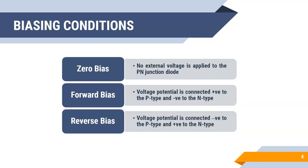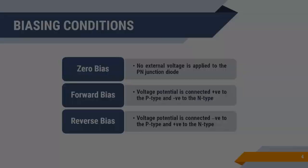Now, we are going to see the types of biasing conditions in PN junction diode. What is biasing? Biasing is nothing but applying external voltage potential to our diode. In diode, we have three types of biasing conditions: zero bias, forward bias, and reverse bias. Let's see about them one by one.